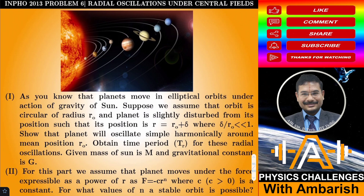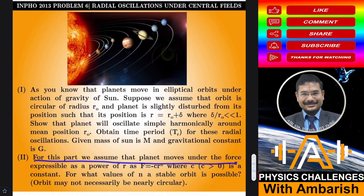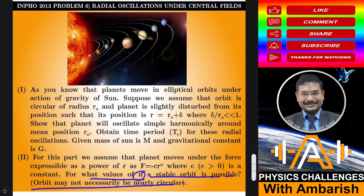The second part of the problem is: instead of a gravitational field, we assume the planet moves under a force expressible as a power of R — F equals minus C times R to the power n. We are talking about a general kind of field. For example, if instead of C we have capital G and instead of n we have minus two, this becomes the gravitational field with proportionality 1/R². For what values of n is a stable orbit possible? The orbit need not necessarily be circular or nearly circular — we are talking about stability for a general orbit under a general central force of the R^n form.